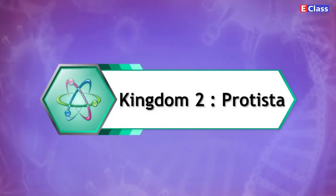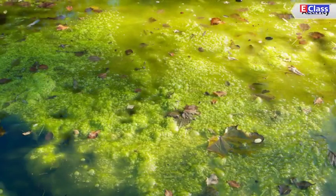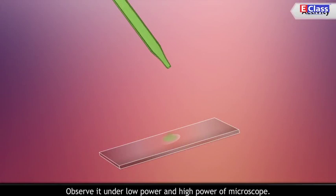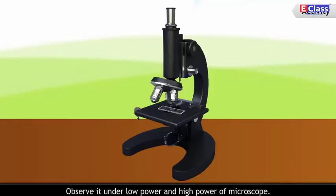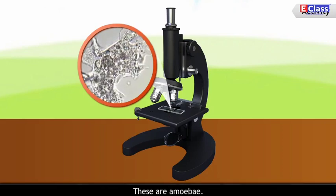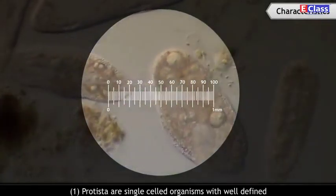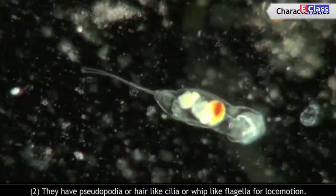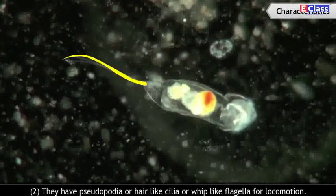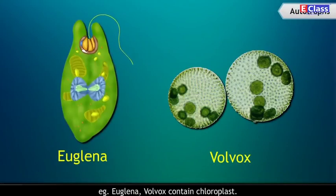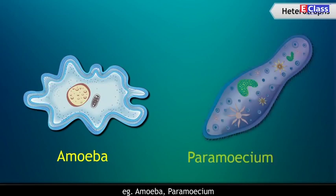Kingdom 2: Protista. Activity: Prepare a temporary mount of one drop of pond water on a glass slide and observe it under low power and high power of microscope. You will find some motile microbes with irregular shape — these are Amoeba. Characteristics: Protista are single-celled organisms with a well-defined nucleus enclosed in a nuclear membrane. They have pseudopodia, or hair-like cilia, or whip-like flagella for locomotion. Autotrophs include Euglena and Volvox (which contain chloroplasts); heterotrophs include Amoeba and Paramecium.